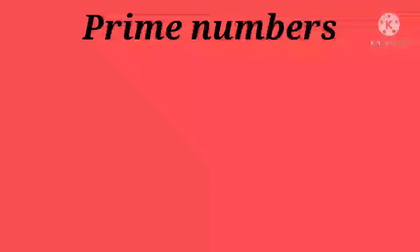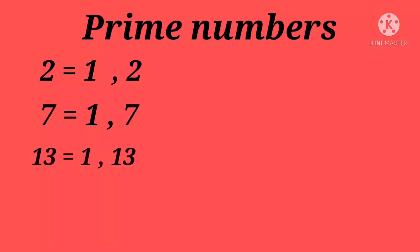Prime Numbers. We have taken some numbers like 2. The factors of 2 are 1 and 2. 7. The factors of 7 are 1 and 7. 13. The factors of 13 are 1 and 13.